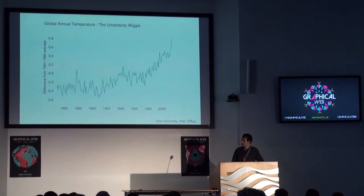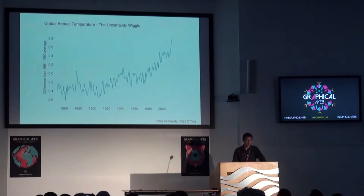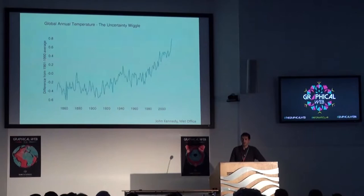I quite like this diagram from John Kennedy at the Met Office, who puts together many of these temperature datasets. He's called it the 'uncertainty wiggle diagram'. The blue line shows temperatures have increased since 1850, with a grey shading area representing our uncertainty in measurements of global temperature. He's also added different blue lines representing different plausible possible paths that might have happened given the uncertainty in our data.